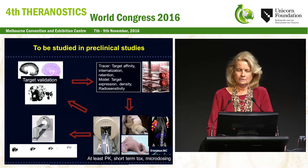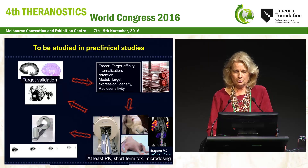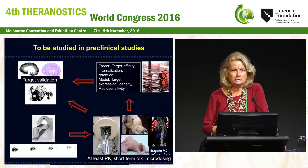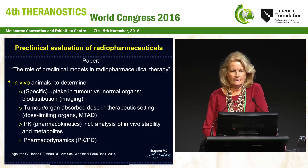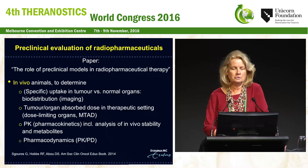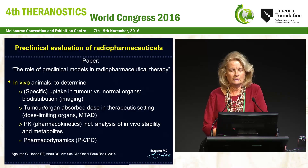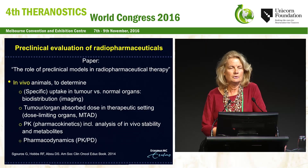Very often from the clinical studies, new questions arise, so we go into back-translation — we go back to the animals and find solutions for, for instance, reducing uptake in normal organs, or even go back to find a better target. In more detail, in vivo animal studies can be used to determine biodistribution — uptake in tumor versus normal organs — the tumor-to-organ absorbed dose in the therapeutic setting, dose-limiting organs, maximal tolerated administered dose, pharmacokinetics, and also pharmacodynamics.